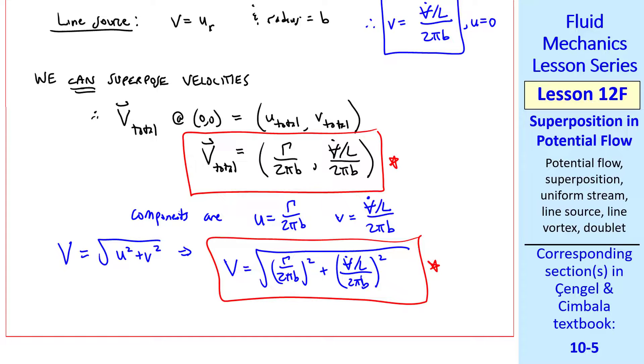If we knew the pressure somewhere in the flow, we could use the most beloved Bernoulli equation to calculate the pressure at our origin. But remember that you can't just add pressures. They don't superpose. What you would have to do is calculate v squared and plug that into the Bernoulli equation. In the next lesson, we'll show some other examples of superposition.